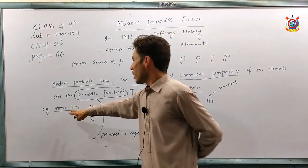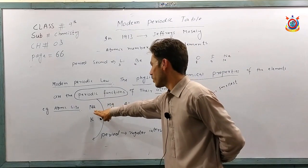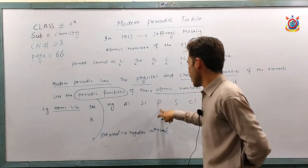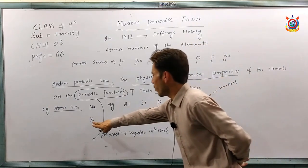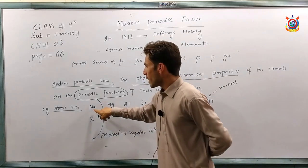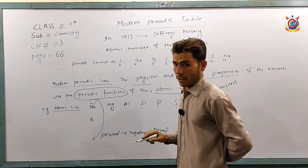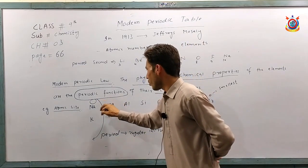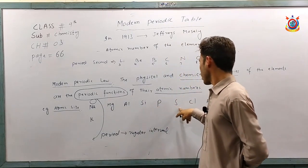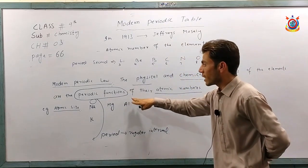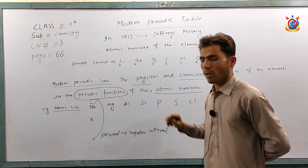For example, if we take the example of atomic size — period number three contains elements sodium, magnesium, aluminum, silicon, phosphorus, sulfur, chlorine, and argon. Sodium has a very large atomic size. But as we move from left to right, from sodium to magnesium, aluminum, silicon, phosphorus, sulfur, chlorine, argon, there is a decrease in the atomic size of the elements.